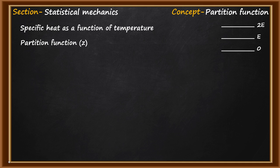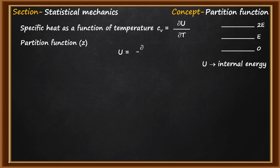The specific heat at constant volume, by definition, is Cv = ∂U/∂T, where U is the internal energy. This U can be calculated using the partition function of the system. By definition, U can be expressed in terms of partition function Z as: U = -∂(ln Z)/∂β = -(1/Z)(∂Z/∂β), where β = 1/(k_B T) and k_B is the Boltzmann constant. The general expression for the partition function is Z = Σ g_i · e^(−β·E_i), and here the degeneracy g_i = 1.